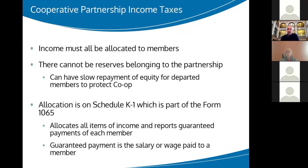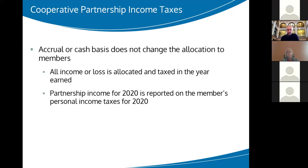The K-1 allocates all items of income and reports the guaranteed payments — the salary or wage someone might get paid during the year. Everything the 1065 reports gets allocated down to the members. Accrual or cash basis does not change the allocation to members — all income is allocated to members in the tax year it's earned. So if you get a K-1 from 2020, you pay tax on your 2020 Form 1040. There's no deferral in a partnership like you have with patronage dividends in an accrual basis cooperative corporation.